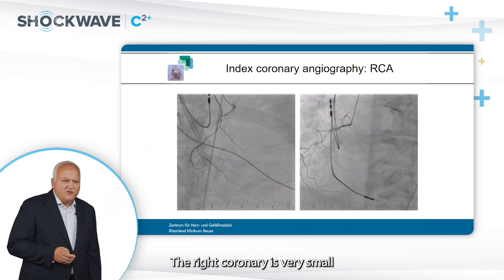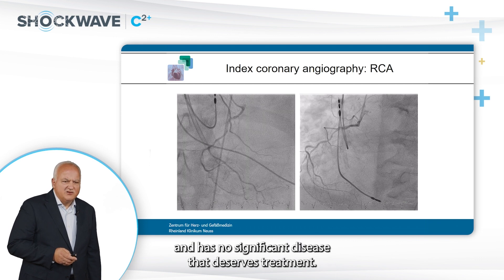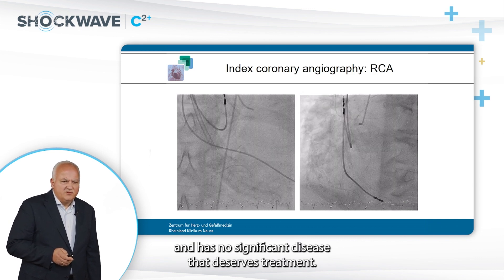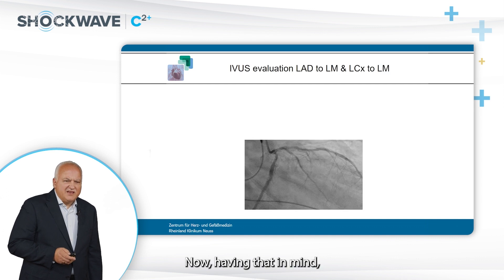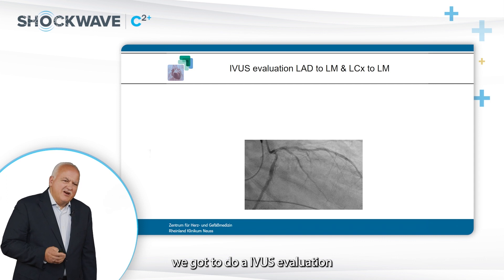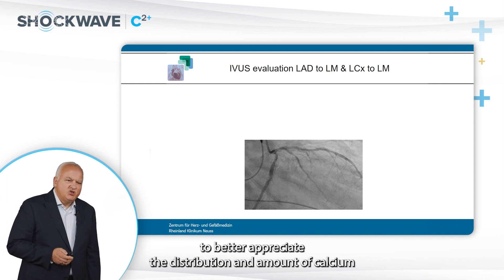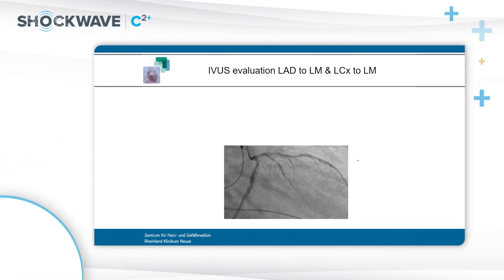The right coronary is very small and has no significant disease that deserves treatment. Having said that, we need to do an IVUS evaluation to better appreciate the distribution and amount of calcium in the left coronary artery.